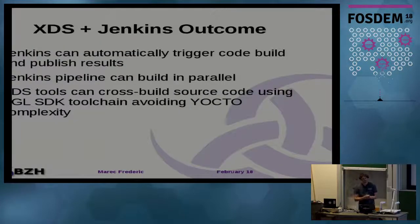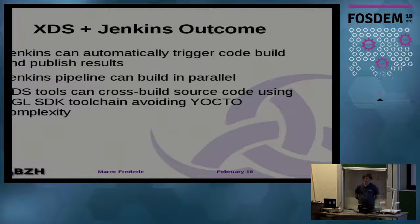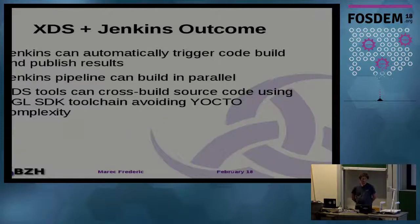XDS and Jenkins outcomes: Jenkins can automatically trigger and build your code. The pipeline can build several configurations in parallel. And XDS tools can avoid Yocto complexity.